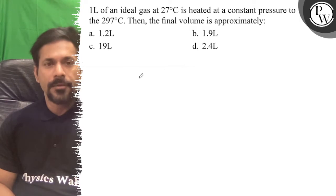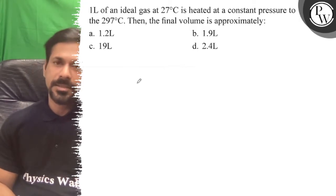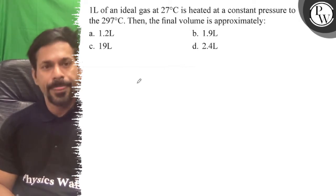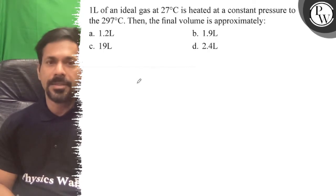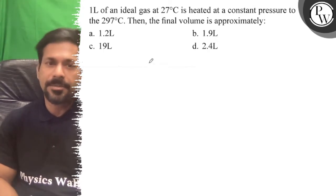Hello, let's see the question. One liter of an ideal gas at 27 degrees Celsius is heated at constant pressure to 297°C. Then the final volume approximately... At constant pressure, V is proportional to T.